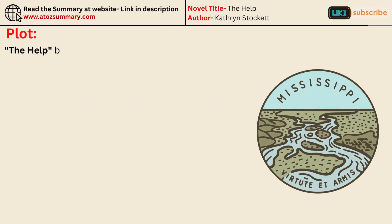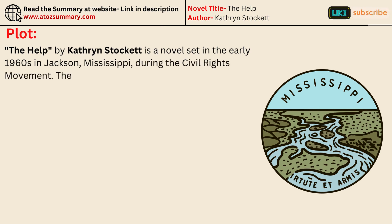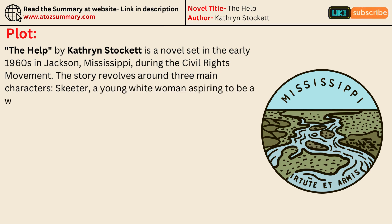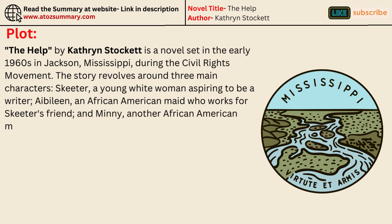The Help by Catherine Stockett is a novel set in the early 1960s in Jackson, Mississippi, during the civil rights movement. The story revolves around three main characters: Skeeter, a young white woman aspiring to be a writer; Aibileen, an African-American maid who works for Skeeter's friend; and Minnie, another African-American maid known for her outspokenness.